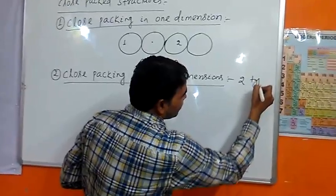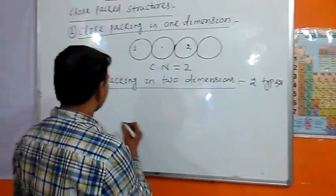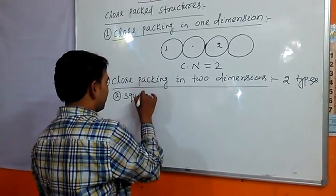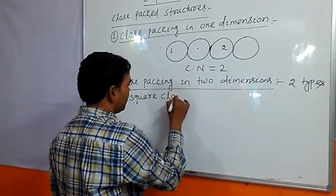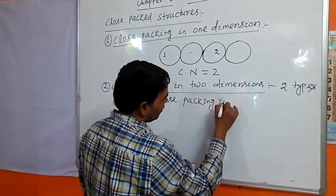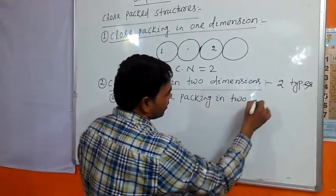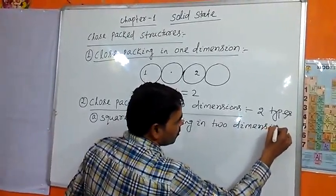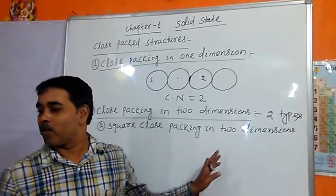Close packing in 2 dimensions. It is of 2 types. The second one is square close packing in two-dimensions.